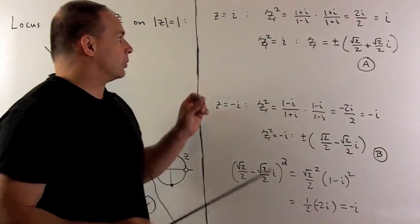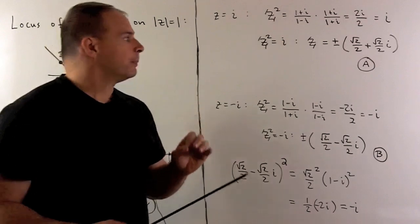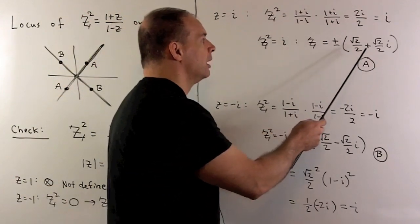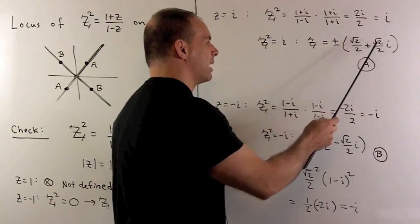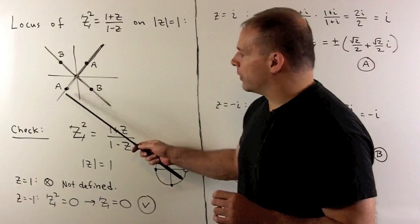If we use z equal to i, big Z squared will be equal to i. Square roots are going to be plus minus square root of 2 over 2, plus square root of 2 over 2 times i. We get the two points marked with an a.